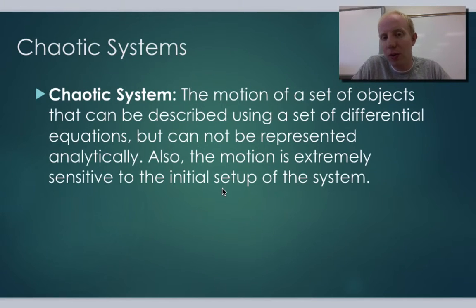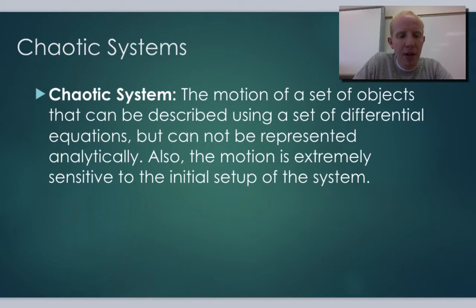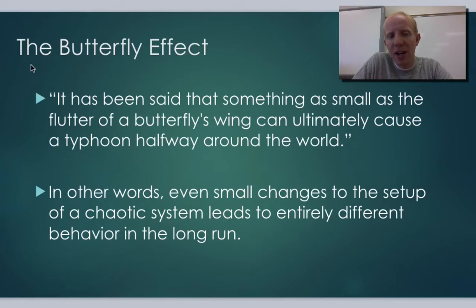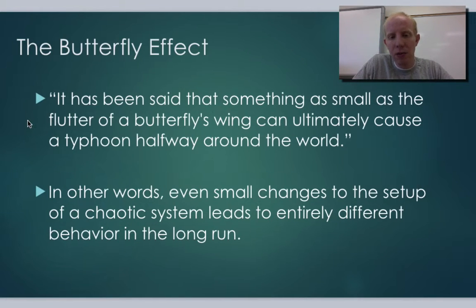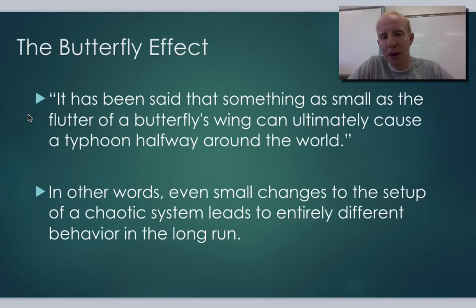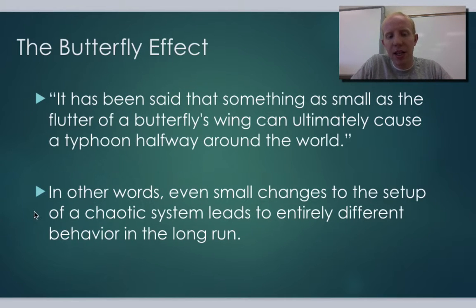Let's look at a couple of other ways we can describe chaos theory. A common one is the butterfly effect — this idea that a system is very sensitive to initial conditions. For the weather, it has been said that something as small as the flutter of a butterfly's wing can ultimately cause a typhoon halfway around the world. That's obviously not literally true, but the idea is that even small changes to the setup of a chaotic system lead to an entirely different behavior in the long run.